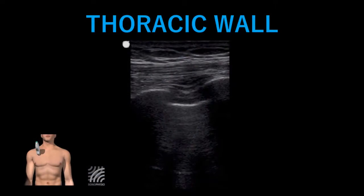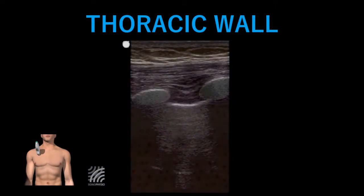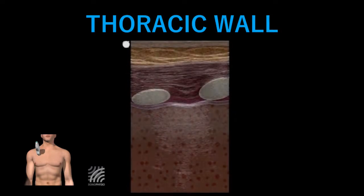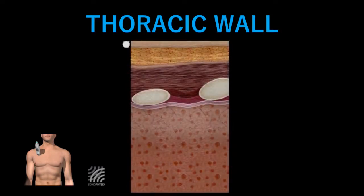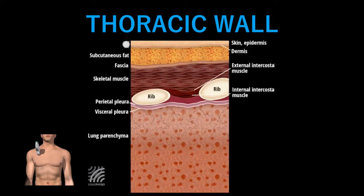Here is an image under ultrasound of the chest wall. You've got various layers and then superimposed onto this is an illustration of those structures. Ultrasound is a surface scanning technique where you scan through the skin, the dermis, adipose tissue, through the musculature, down to the ribs and beyond. It's very good at visualizing superficial structures and can give you indication about what's going on in the pleural layer and into the lung tissue itself.